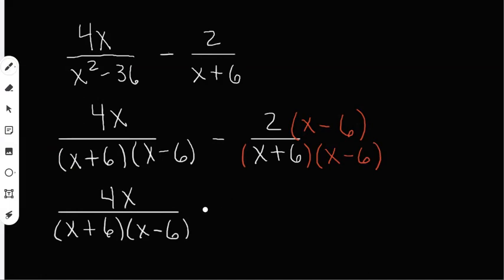And for the second fraction, what we can do is we can distribute the 2 to everything on the inside of the parentheses. So 2 times x is going to give me 2x, and 2 times negative 6 is going to give me negative 12. So I get 2x minus 12 on top. Now, on the bottom, I'm going to have x plus 6, x minus 6.